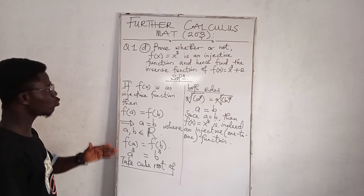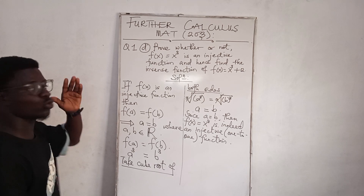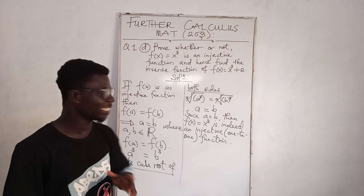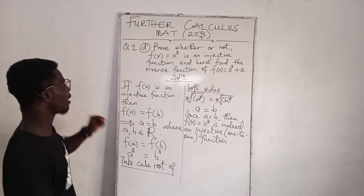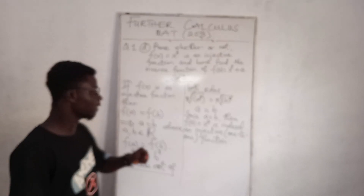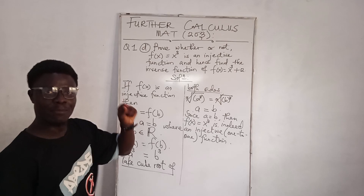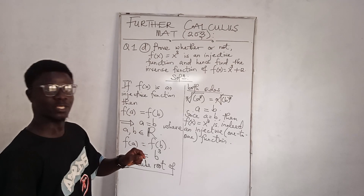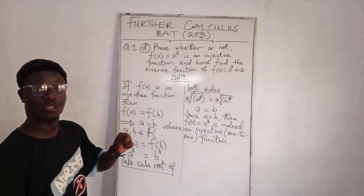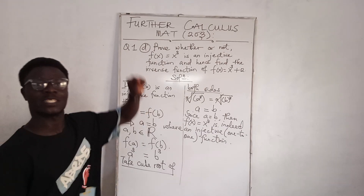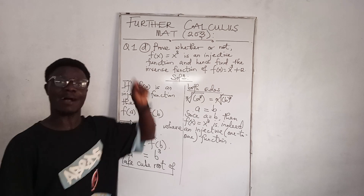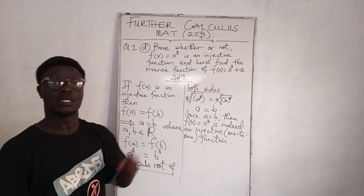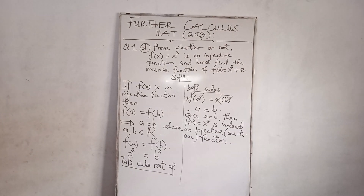So that's how you solve for any one-to-one or injective function. We conclude for the examiner: since a = b, f(x) = x³ is indeed an injective or one-to-one function. If f(x) is an injective function, then f(a) must equal f(b), which implies a = b, where a and b are members of the real numbers. Now let's move on to question 2.